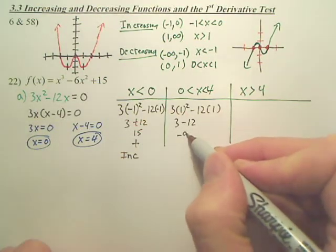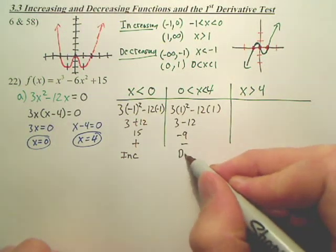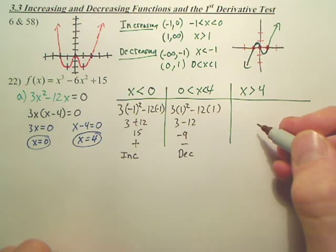which is negative 9. So that's negative, right? What's the slope? Decreasing.